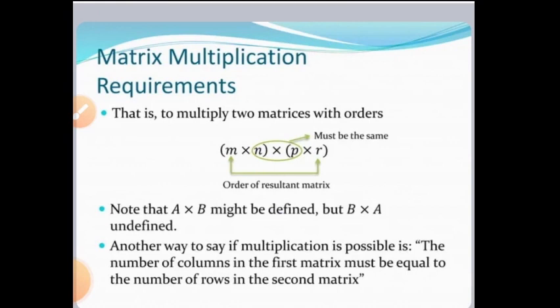For Matrix Multiplication, we should know two points. First one is when we multiply two matrices, and the second one is how to multiply two matrices. So these two points are very important for Matrix Multiplication.